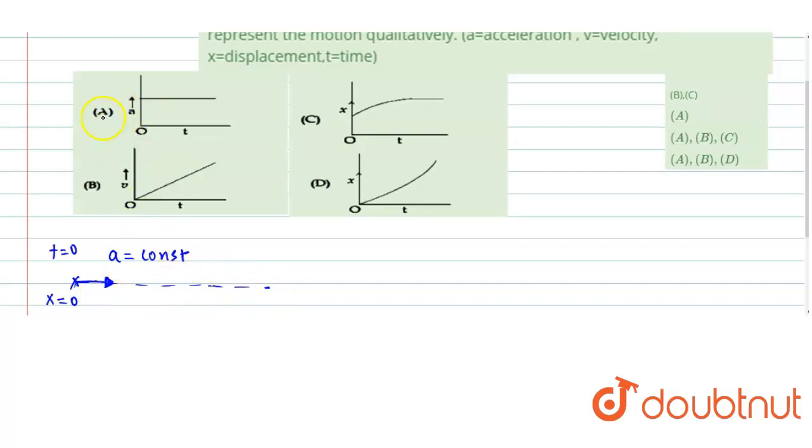So now let's check part A, acceleration versus time graph. Here it is given that the acceleration has a constant value as time is increasing. So that makes it correct.